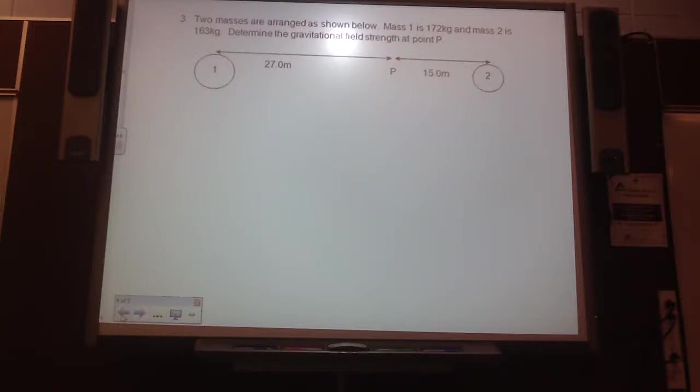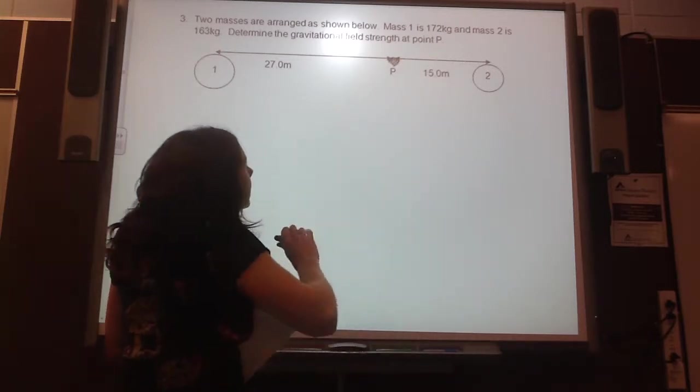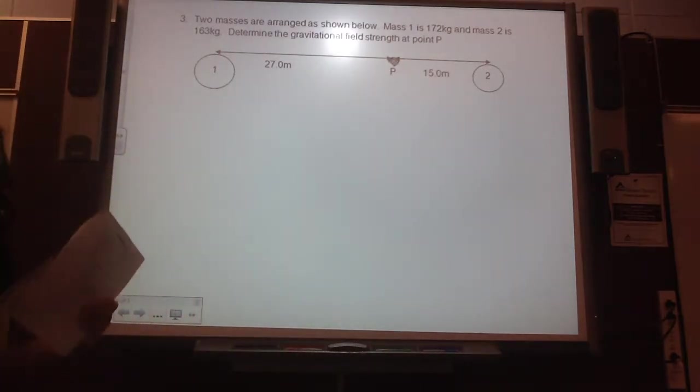Okay, so here's something kind of cool that we could apply to two planets and how they would interact with each other. These aren't planets because they're pretty small in mass, but same sort of principle here. Here it's saying, here's like point P. Here's point P. What is the gravitational field strength at point P?